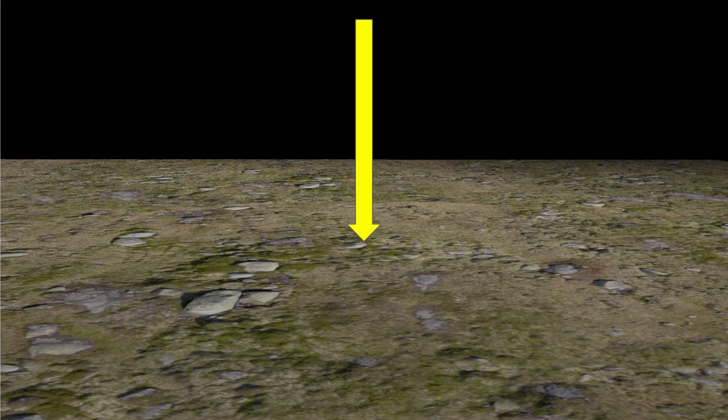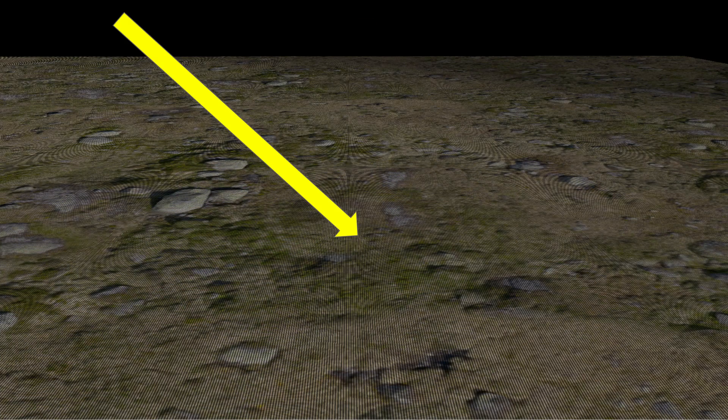Another problem is that during the lighting pass we may have two neighboring pixels that are actually covered by the same texel in the shadow map. In that case one pixel may get the same depth as in the shadow map or slightly lower, while the other one ends up behind the shadow map. In the following example the only object being rendered is the flat terrain. When the light points directly down there is no problem, but as the light hits the surface at sharper angles the shadow acne artifact appears.